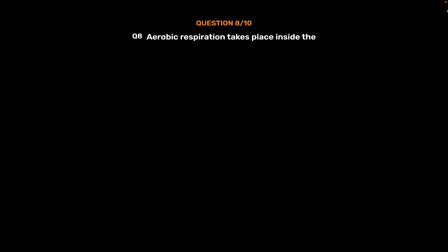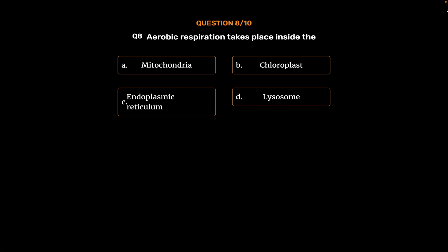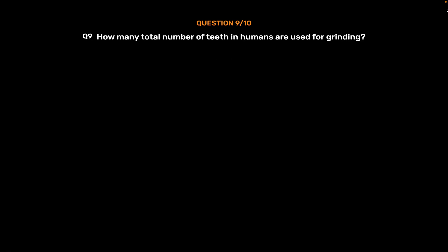Question 8: Aerobic respiration takes place inside the: Option A, Mitochondria; Option B, Chloroplast; Option C, Endoplasmic reticulum; Option D, Lysosome. The correct answer is Option A, Mitochondria.